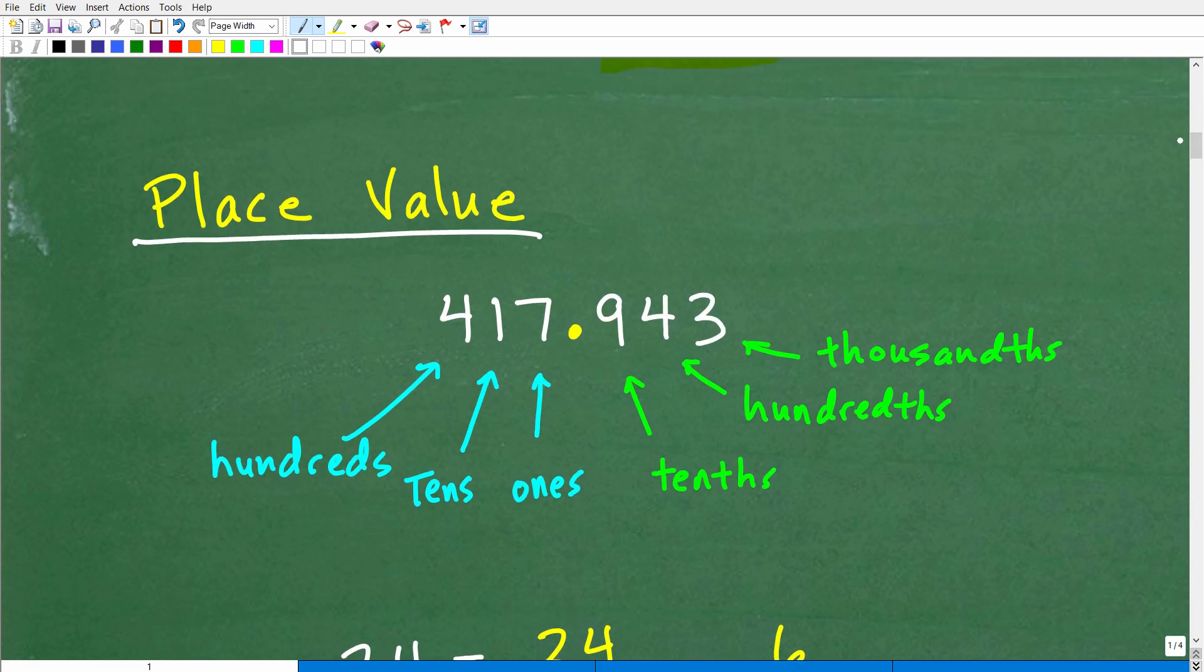Matter of fact, a lot of students just get angry about it. Like, oh yeah, I learned that once. I really don't want to learn this again. Well, listen, this is what we're going to need to know in order to write a decimal as a fraction. So let's just quickly review this. It's not that difficult. But here you can see I have a basic place value chart. So here's a number, 417.943.